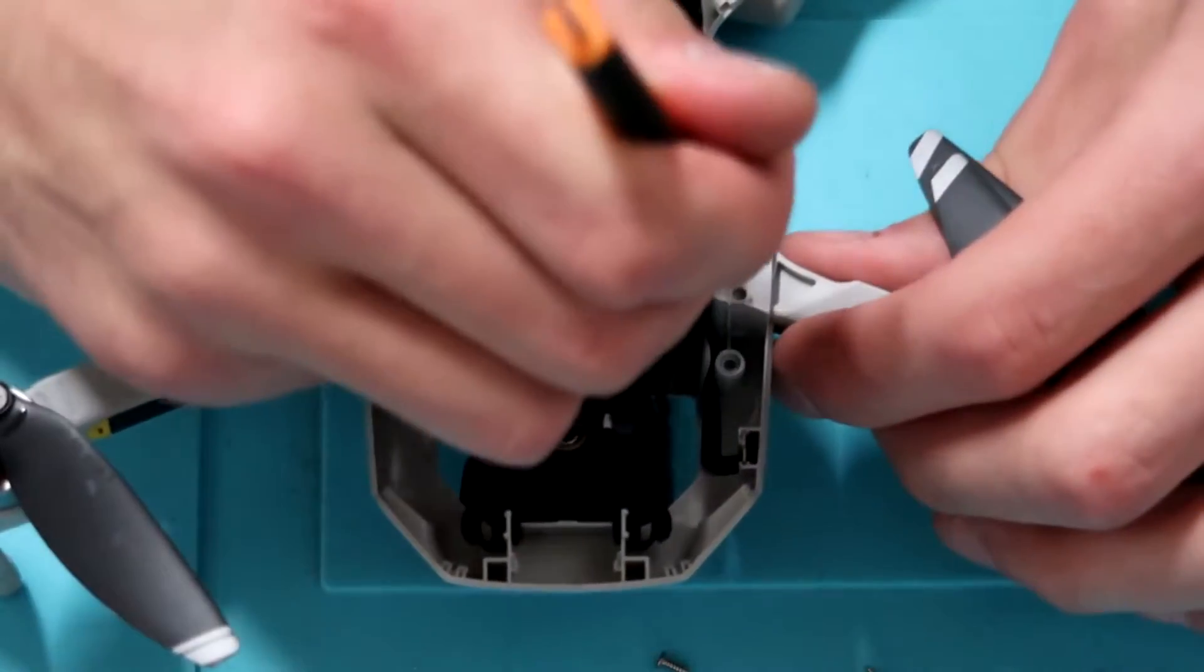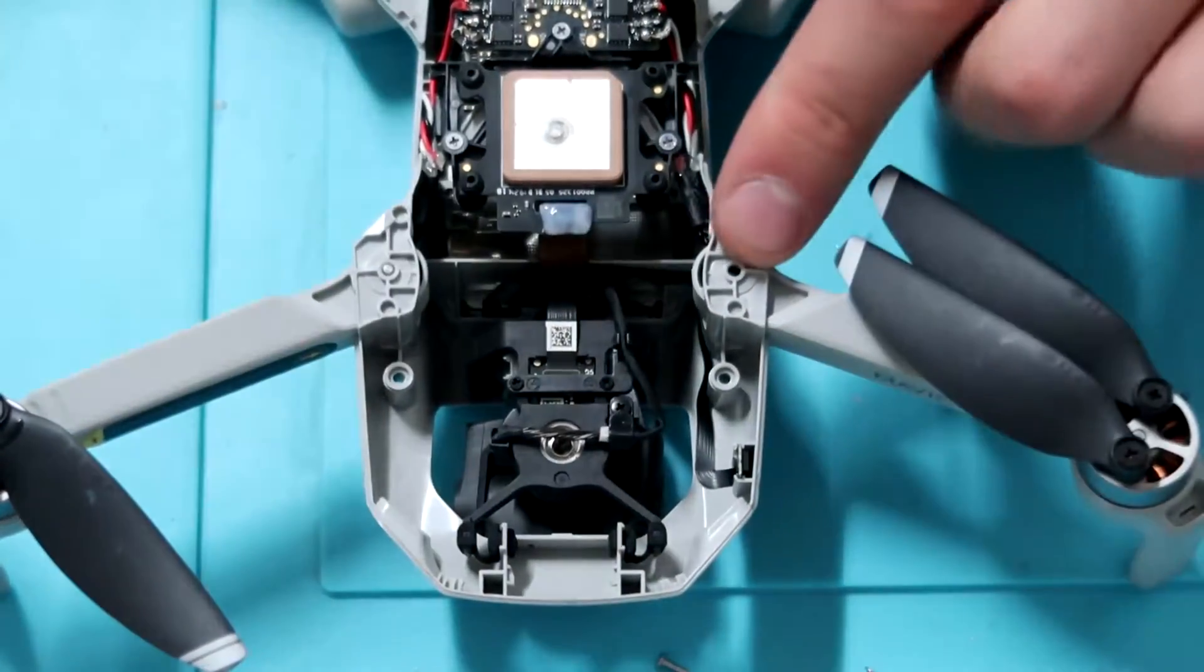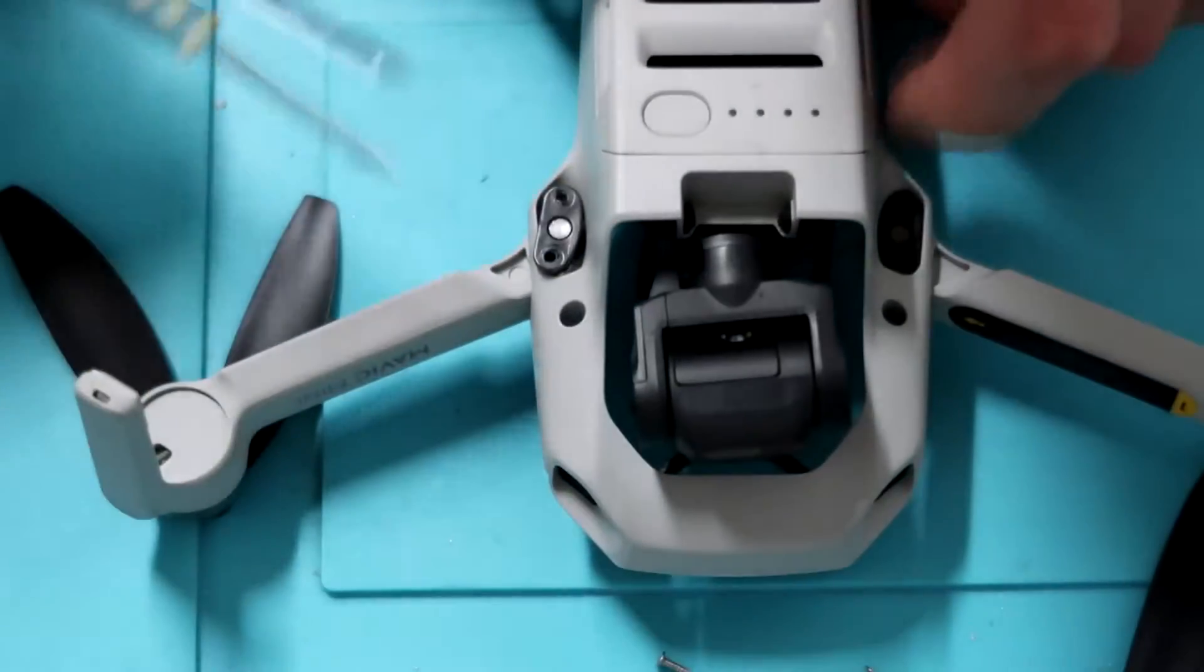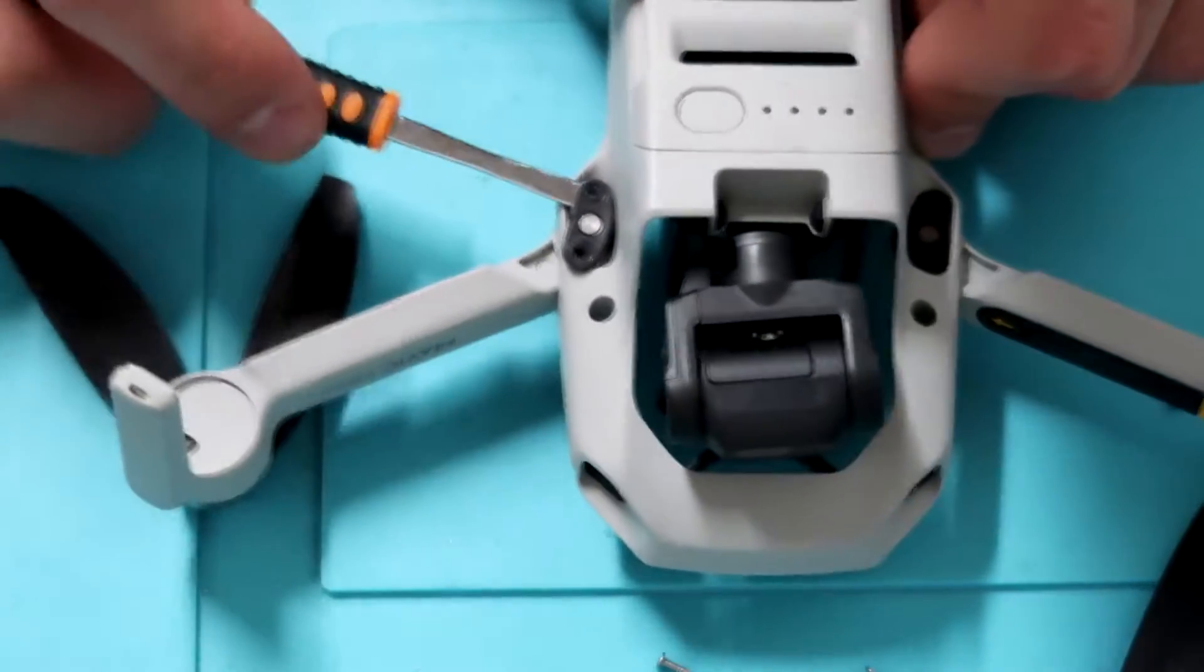So once you have the screws out, go ahead and flip the drone over. And you'll see right where the arm bracket is a tiny little silver dot. That's going to be the top of the arm bracket. Just go ahead and push that down a little bit. And you'll be able to have some room to actually pry underneath the arm bracket and get it out of the drone.